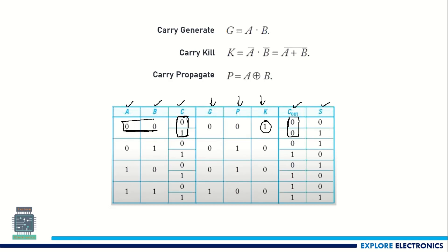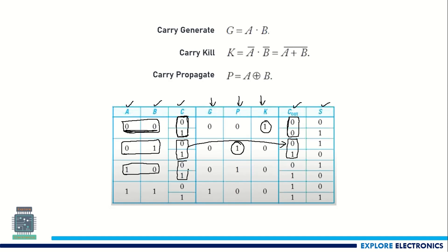Similarly, if you look at the 0 and 1 combination of inputs, if the carry is 0 or 1, you can see it is just 0 and 1 propagated to the next stage — there is no change in the carry when the inputs are 0 1. So we say the propagate signal indicates the same carry is passed to the next stage. For 1 0 inputs again, if carry is 0 or 1, that same carry is propagated to the next stage without any change. This propagate signal indicates the carry is propagated to the next stage unchanged.